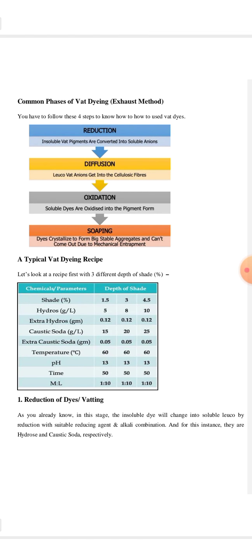Now, we will explain the common phases of vat dyeing. In the vat dyeing process, we have to follow these four steps. First is reduction, in which insoluble vat dye will be converted to soluble leuco form. Then diffusion, the leuco vattin ions will be absorbed into the cellulosic fibers. Then oxidation, the soluble dyes will be oxidized back to their pigment form. And then the post-treatment process, which includes soaping.